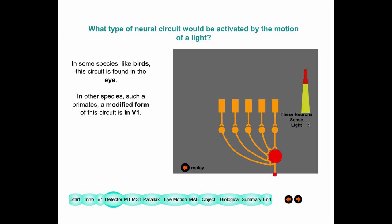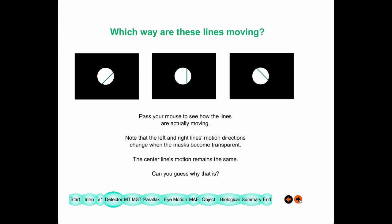In species like birds, you find these types of direction-selective circuits all within the retina — those are your rods, cones, and ganglion cells. But in other species like us, this circuitry occurs within your primary visual cortex, area V1, so these aren't rods and cones but layer 4C cells.